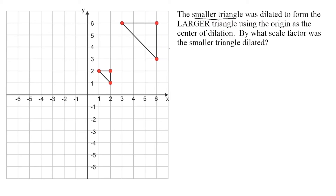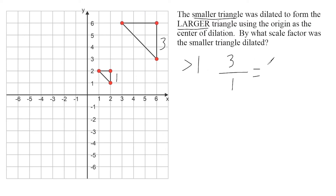This time it says the smaller triangle was dilated to form the larger triangle, meaning the smaller triangle is being stretched, so the scale factor has to be greater than one. Using corresponding side lengths, the smaller side has a length of one and the corresponding larger side is three. We write three on top and one on the bottom to get a value greater than one — three over one simplifies to three. Using corresponding points, this point has an x value of six and its corresponding point has an x value of two. Six over two also simplifies to three.